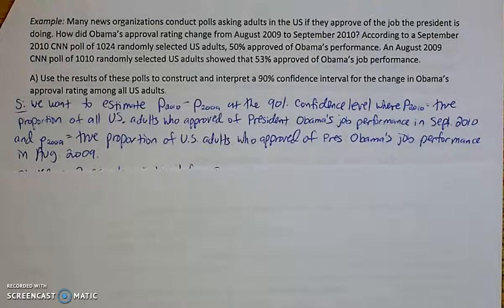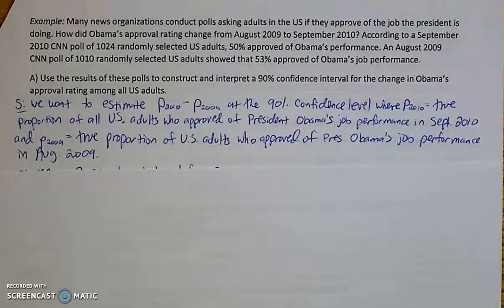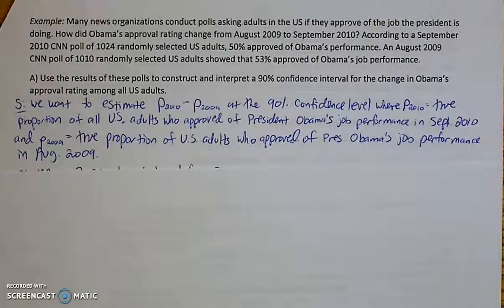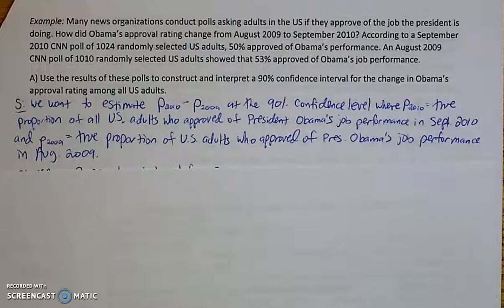So first thing we have to do is state our proportions, our parameters, and what we're trying to estimate. We're estimating P-2010 minus P-2009 at our 90% confidence level, where P-2010 is the true proportion of all U.S. adults who approved of Obama's job performance in September 2010. And similarly, P-2009 is the true proportion of U.S. adults who approved of President Obama's job performance in August of 2009.